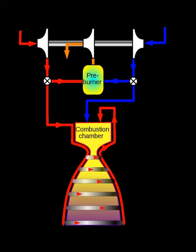The gas generator cycle is a power cycle of a bi-propellant rocket engine. Some of the propellant is burned in a gas generator and the resulting hot gas is used to power the engine's pumps.